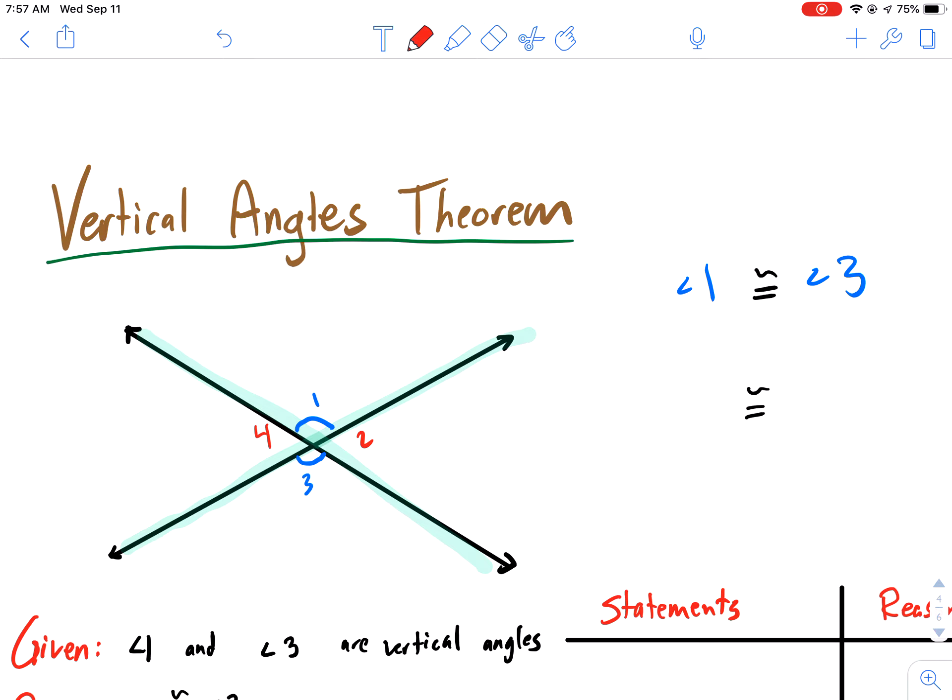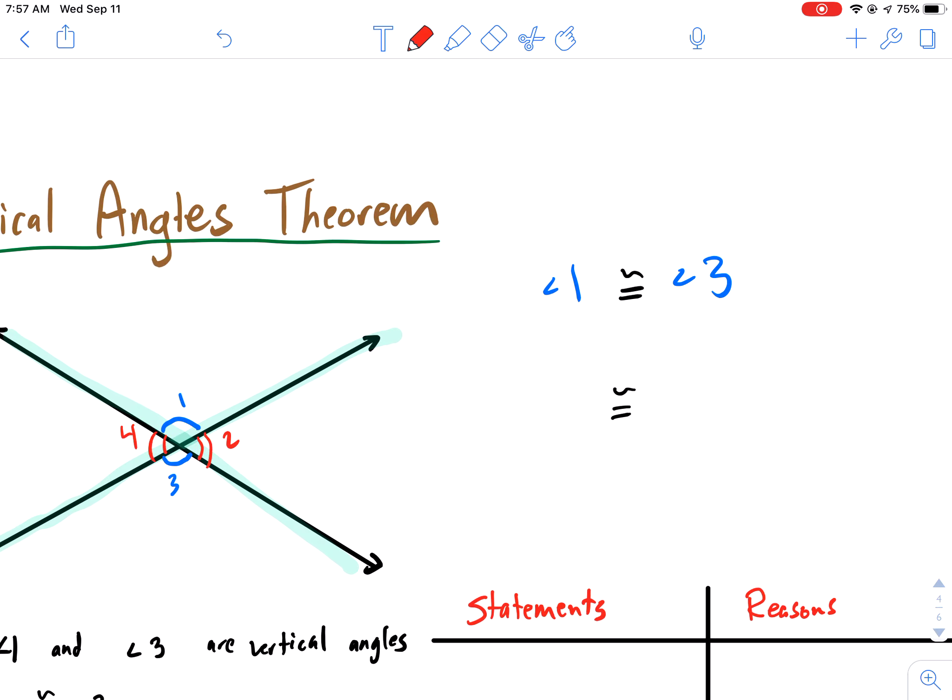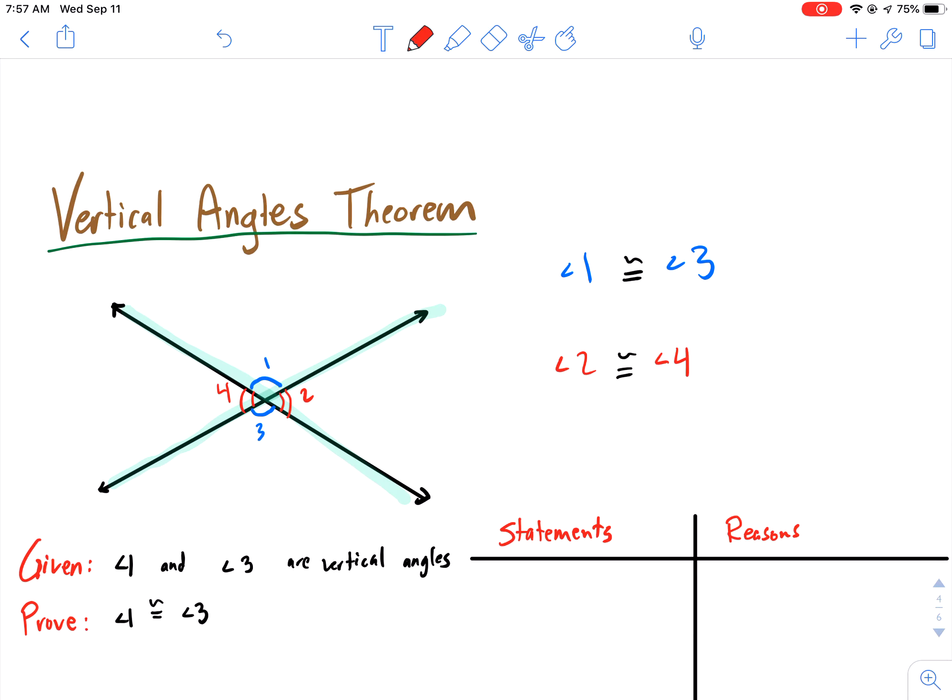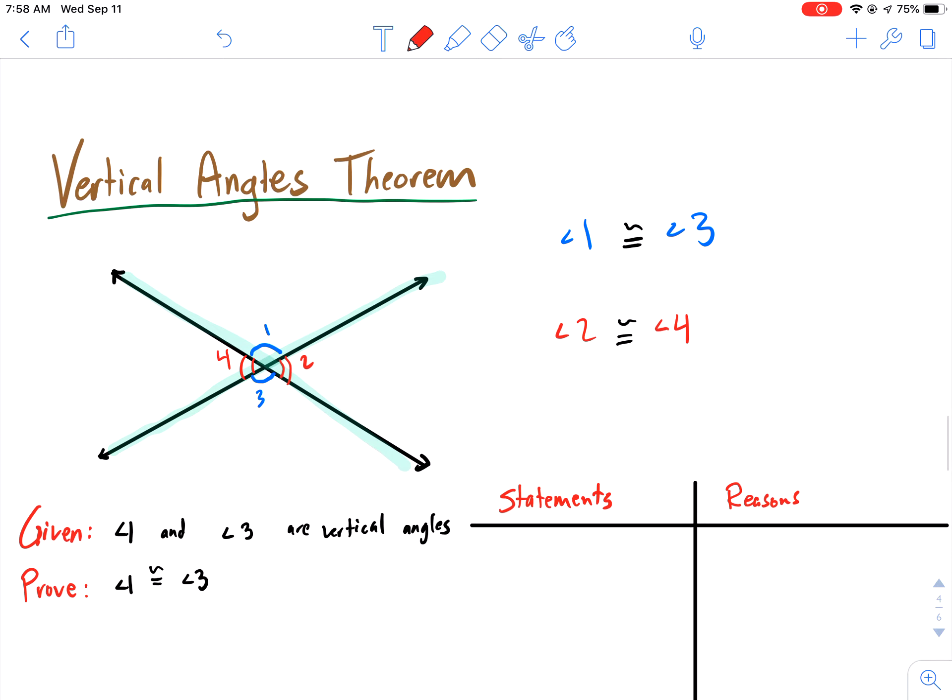So vertical angles are congruent. Now, what does that leave for 2 and 4? They are also congruent, so we're going to designate that they might be different measure with two lines. So angle 2 and angle 4 are congruent.